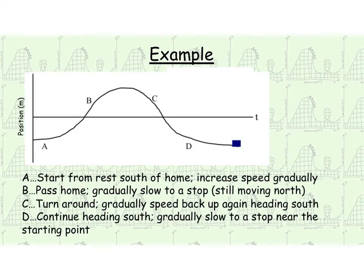Here's an example. We start from rest south of the house, so our origin is here — at rest means a horizontal line on the distance versus time graph, zero velocity. Then we gradually speed up, pass our house at the origin, and gradually slow back to a stop. Then we turn around and go the opposite direction, heading back towards home. We pass home, speed up heading back down, and then gradually slow down to a stop somewhere close to our starting point.